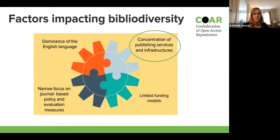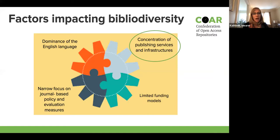A number of very interconnected factors are contributing to the decline in biblio diversity: the dominance of the English language and pressure to publish only in English, the way we evaluate research based on high-impact or prestige journals, the very limited funding models to support services and infrastructure around scholarly communication, and the consolidation of publishing services and infrastructures. Today this panel is going to focus on the concentration of services and infrastructures and how a distributed system might be able to address these issues around declining biblio diversity.